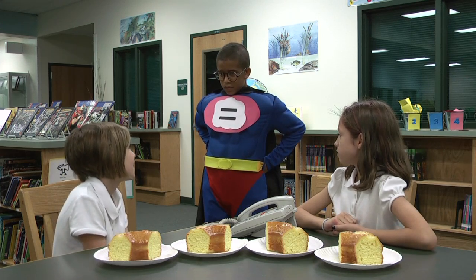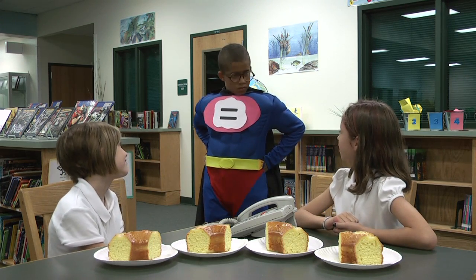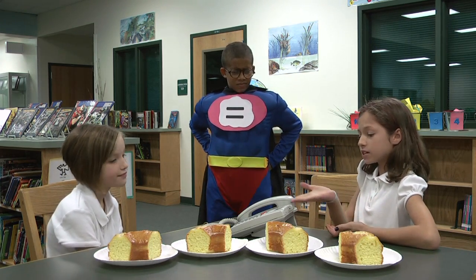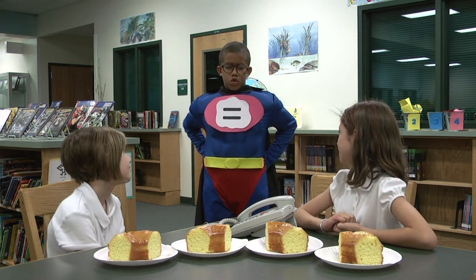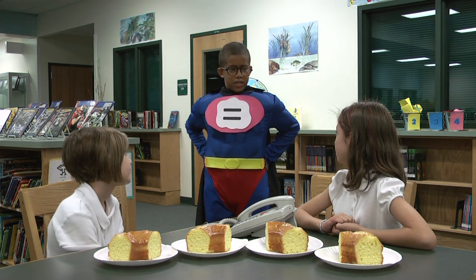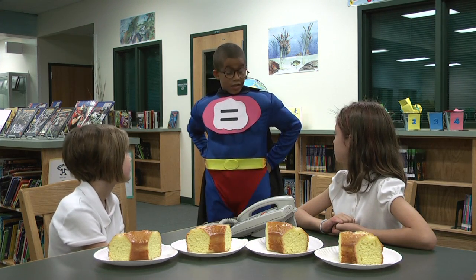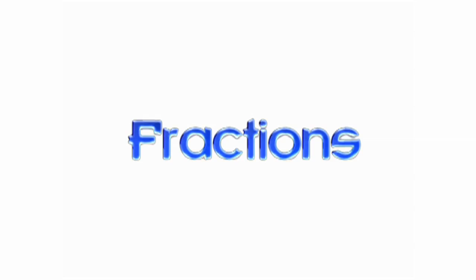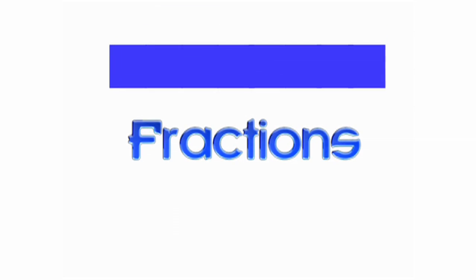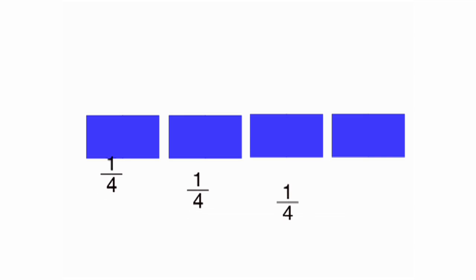Oh, Captain Equivalent, I am so glad you are here. Can you help us? We don't have enough pieces of cake for our friends. No problem. Equivalent fractions help us make more pieces from the same amount. Remember, fractions are a way of thinking of parts of a whole. If we take one thing, such as a cake, and divide it into four pieces, we will still have the same amount of cake, just more pieces. Each piece we make is one-fourth of a cake.